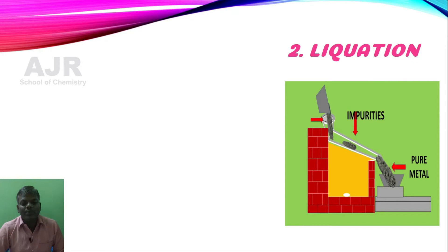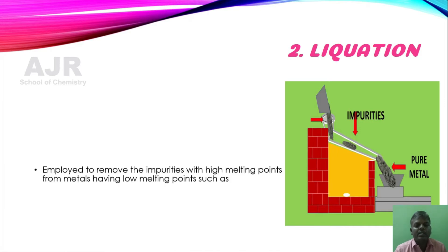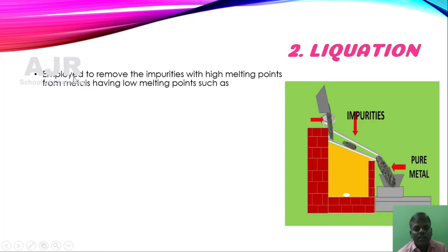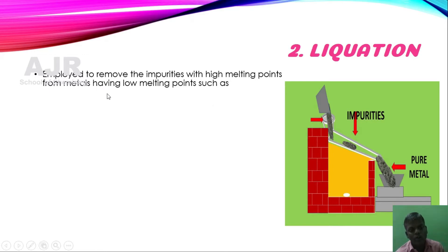The second refining process is liquevation. This process is employed to remove impurities with high melting points from metals having low melting points. The impurities have a high melting point, while the metal has a low melting point, so they can be easily separated.